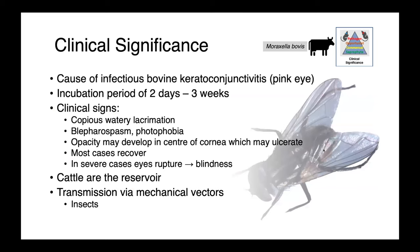Moraxella bovis is the cause of bovine keratoconjunctivitis, or pink eye. From exposure, we see an incubation period of two days to three weeks. Affected animals have copious watery lacrimation, blepharospasm, and photophobia or sensitivity to light. We can see the development of corneal edema and opacity in the center of the cornea, which can actually ulcerate. In very severe cases the eyes can rupture, leading to blindness, although most animals recover. Cattle are the main reservoir of Moraxella bovis, and it's transmitted between individuals through insect vectors — the fly lands on the eye, consumes some of that lacrimal fluid, then moves on to the next animal, bringing the organism with it.